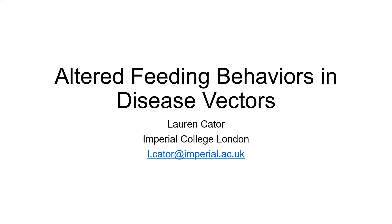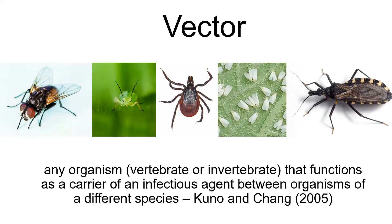Good morning. Today I'm going to be talking to you a little bit about altered feeding behaviors that are observed in disease vectors. A vector is any organism that functions as a carrier of an infectious agent between organisms of a different species. This can include mechanical vectors, like this housefly here, that move the causative agent of trachoma between hosts without actually getting infected with trachoma itself, and also biological vectors — for example, like this tick — in which the pathogen needs to undergo either obligate life stages within the vector or multiple rounds of replication.